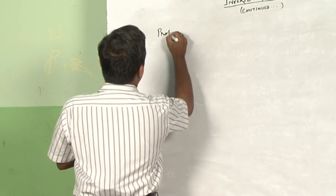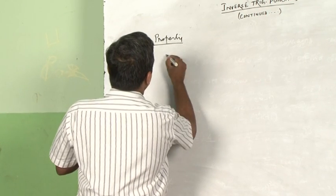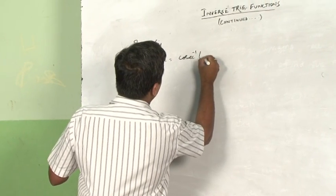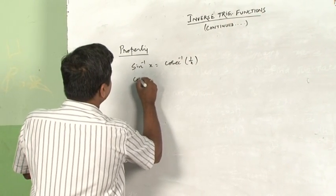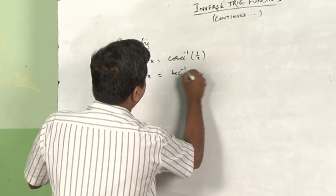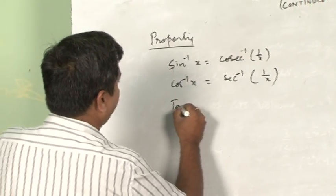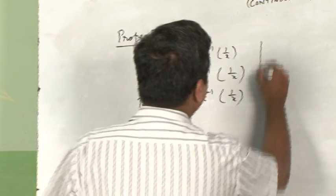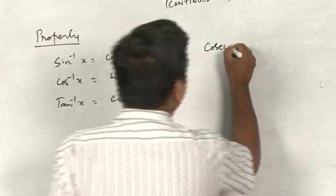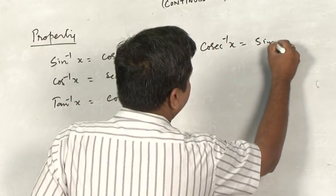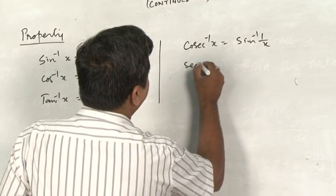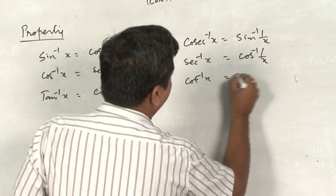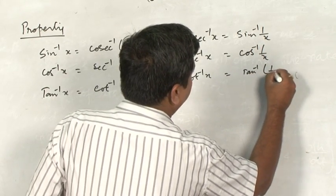The first property of inverse trigonometric functions: sin inverse x is equal to cosecant inverse 1 by x, cos inverse x is equal to secant inverse 1 by x, tan inverse x is equal to cot inverse 1 by x. These formulas can also be replicated as: cosecant inverse x is equal to sin inverse 1 by x, secant inverse x is equal to cos inverse 1 by x, cot inverse x is equal to tan inverse 1 by x.